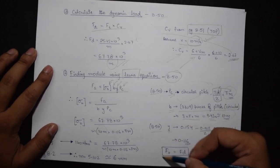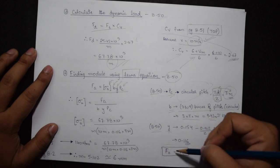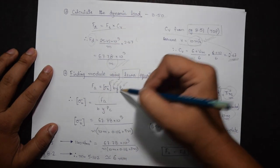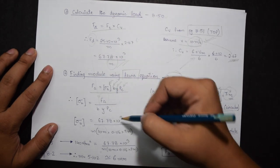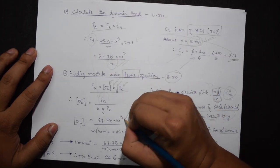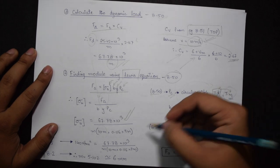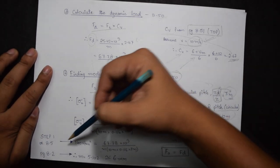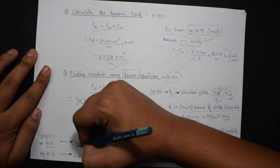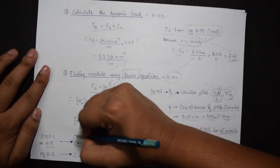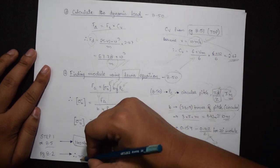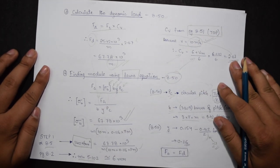Also the value of FA equals FD. Thus I will be replacing FA by FD and substituting the value 67.78 times 10 to the power 3 divided by M. Now sigma B was seen from page 8.5, therefore the value of sigma B is 140 newton per mm square. Solving this cubic equation I get the value of M as 5.102.